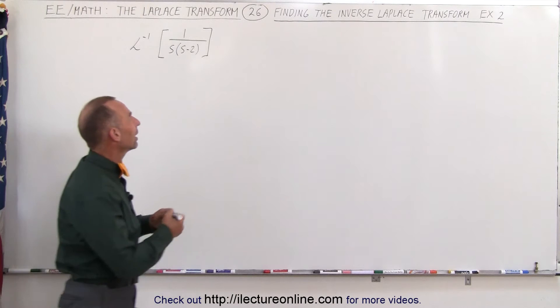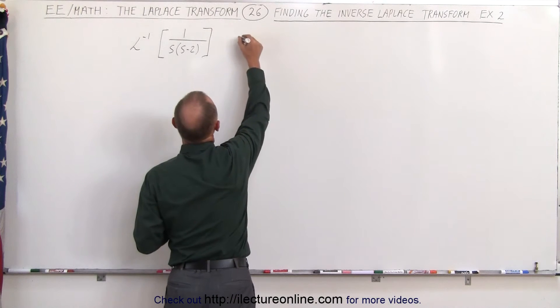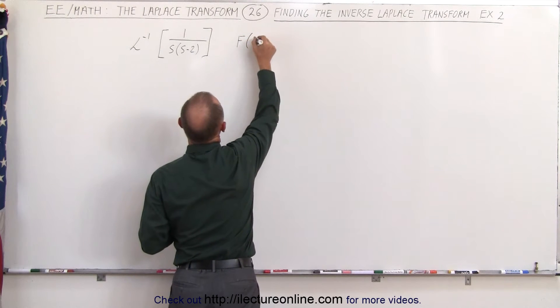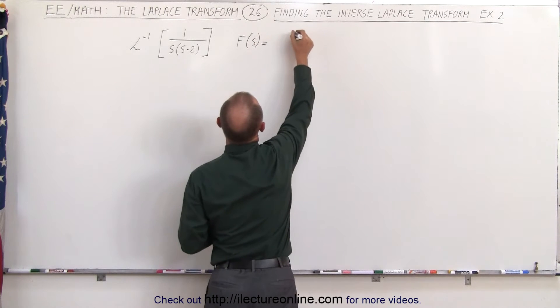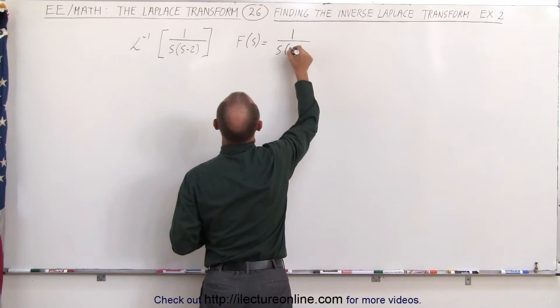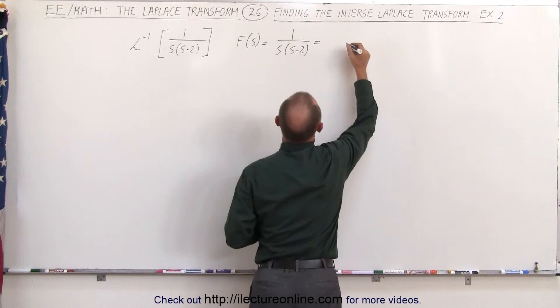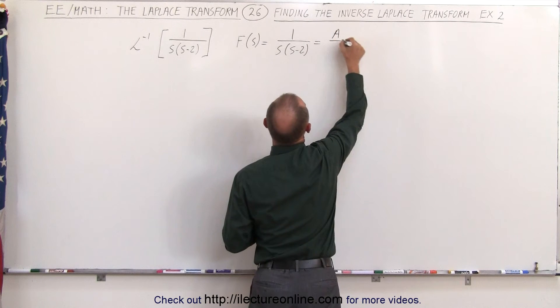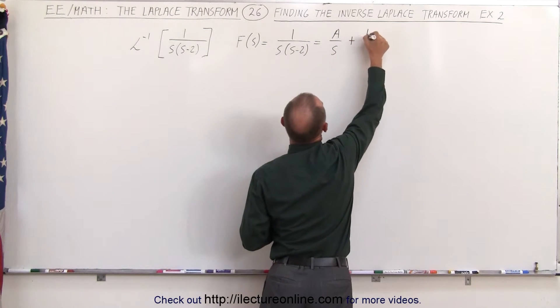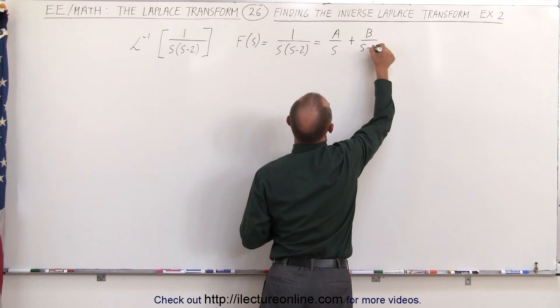So what we want to do is realize that we want to write this as a sum of two fractions, so f(x) which is equal to 1 over s times s minus 2 can be written as a divided by s plus b divided by s minus 2.